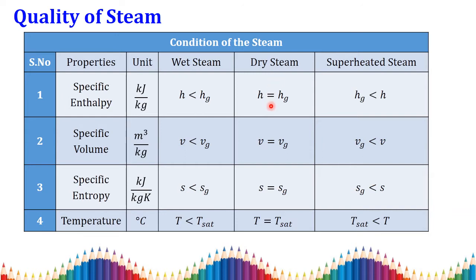For dry steam, the dryness fraction x equals 1. For superheated steam, the specific enthalpy of saturated vapor is less than the given enthalpy. The same classification applies to specific volume: if the given specific volume is less than the saturated specific volume of vapor, it is wet steam; if equal, it is dry steam; if the saturated specific volume is less than the given specific volume, it is superheated steam. The same condition applies for specific entropy.